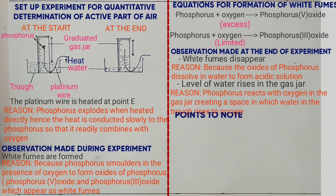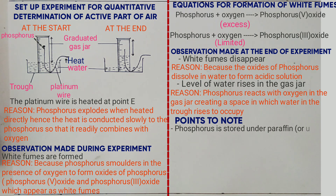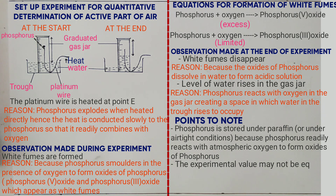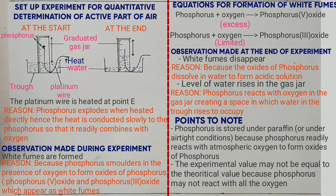Points to note from this experiment: phosphorus is stored under paraffin or in airtight conditions because it readily reacts with oxygen to form oxides of phosphorus. Point two: the experimental value may not equal the theoretical value, because phosphorus may not react with all the oxygen in air. The percentage of active air is obtained by: initial volume minus final volume, divided by initial volume, times 100%.